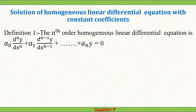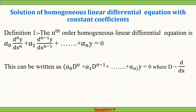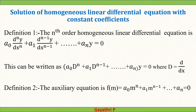Definition. The nth-order homogeneous linear differential equation is of the form a0 d^n y/dx^n + a1 d^(n-1) y/dx^(n-1) + ... + an·y = 0. This can be written as (a0 D^n + a1 D^(n-1) + ... + an)·y = 0, where capital D = d/dx. The auxiliary equation is f(m) = a0 m^n + a1 m^(n-1) + ... + an = 0, obtained by replacing D with m.